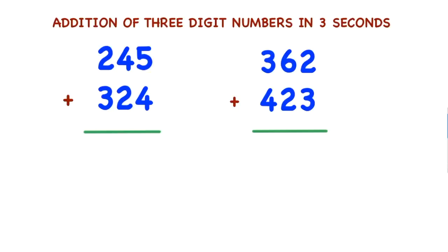Addition of 3-digit numbers in 3 seconds. How to add? You come to this example. In the hundreds place, 2 is there, so you consider 200. In the hundreds place, 3 is there, so you consider 300. 200 plus 300 is 500.